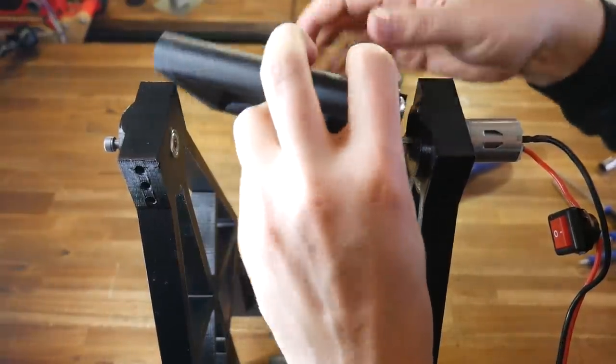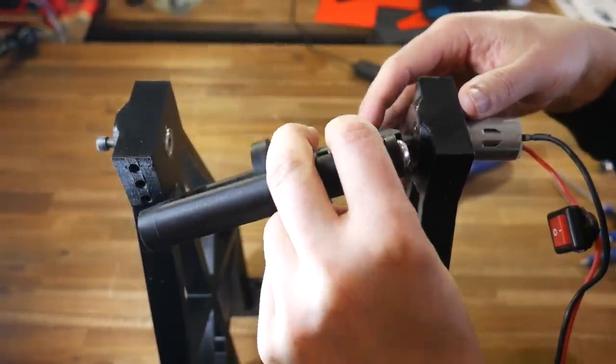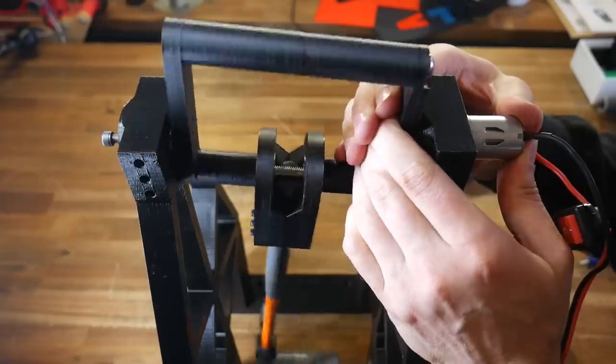To finish off, we need to rotate the pivot arm so that the flat on the shaft coming out of the motor aligns with the cutout on the printed part, and once it does we simply squeeze it into position. This is designed to be quite tight so it doesn't slip under load.